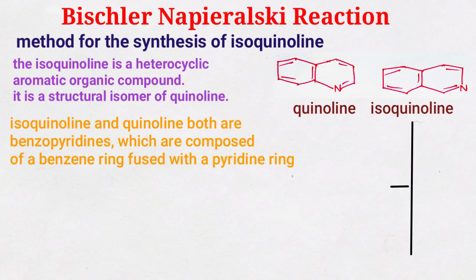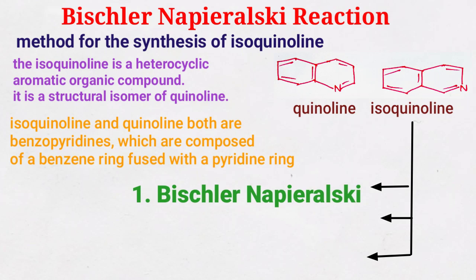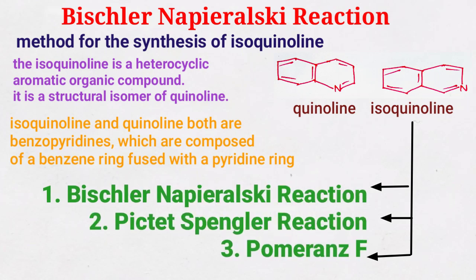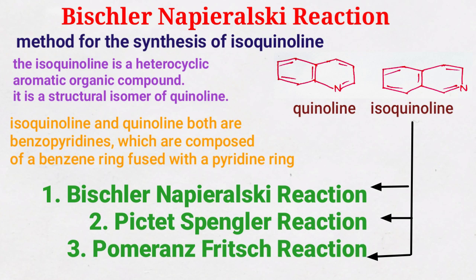Now isoquinoline can be synthesized by mainly three methods. The first one is the Bischler-Napieralski reaction, the second one is the Pictet-Spengler reaction, and the third one is the Pomeranz-Fritsch reaction. Here I will discuss the first one — the synthesis of isoquinoline by the Bischler-Napieralski reaction — and the other two methods I will discuss in another video.